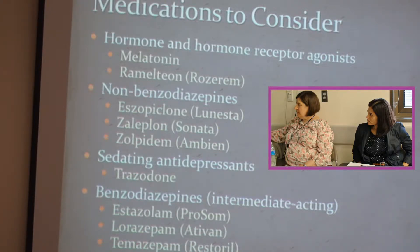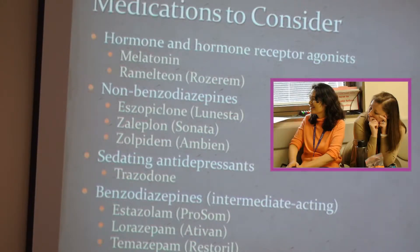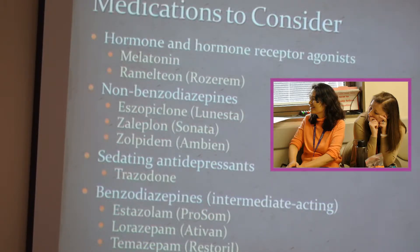Eszopiclone — Lunesta — has the longest half-life of these agents at five to seven hours. People complain of an unpleasant metallic taste, and in the morning there's significant drowsiness and impairment. If you're aiming for nine to ten hours of sleep that might work, but most geriatric patients don't sleep that many hours, and the last thing you want is for them to get up in the morning and fall because they're disoriented.